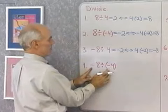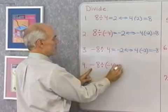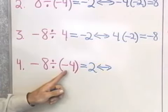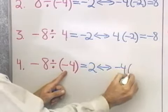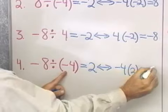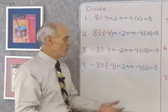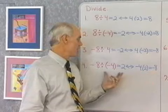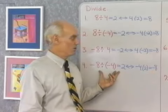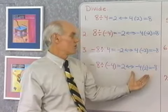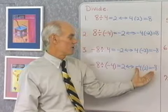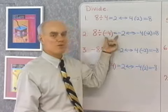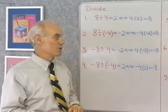Our last problem here: negative 8 divided by negative 4 should be positive 2. The associated multiplication problem is negative 4 times positive 2, which is negative 8. We know that multiplication problem is true, and because of that, we know the division problem must also be true. These associated multiplication problems justify the rule we're using to divide positive and negative numbers.